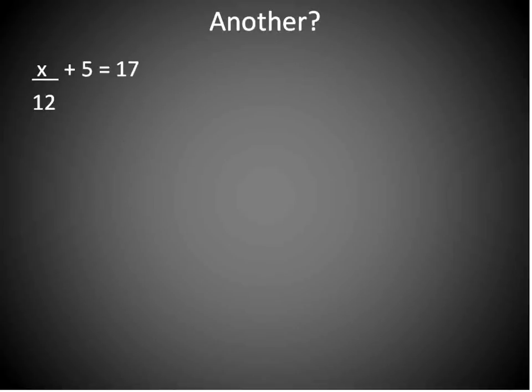All right, let's take a look at this one here. We've got x in a fraction, x/12 + 5 = 17. I'm going to start out by subtracting 5 from both sides of this equation. Notice I'm starting farther away and then I'm moving into the variable. Or I'm doing the adding and subtracting first and then I'm going to do the multiplying dividing later.